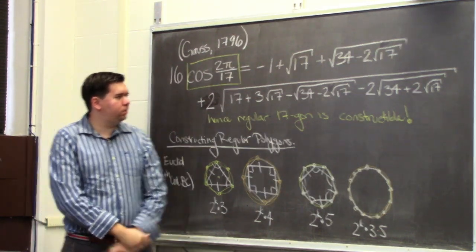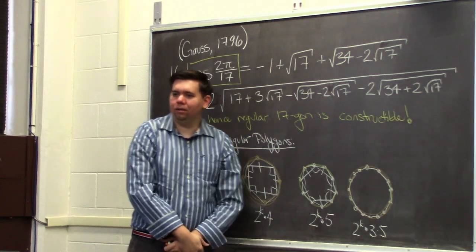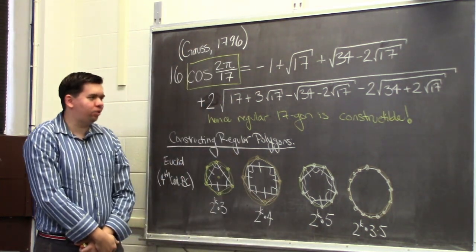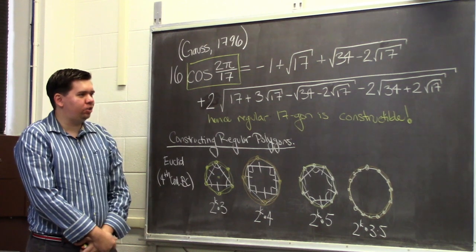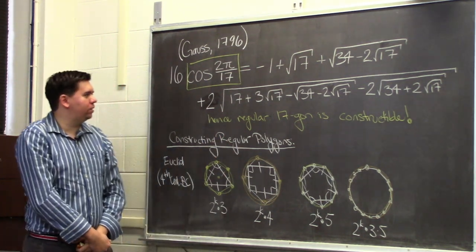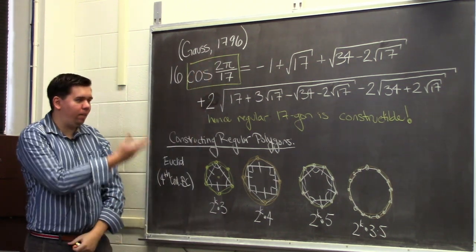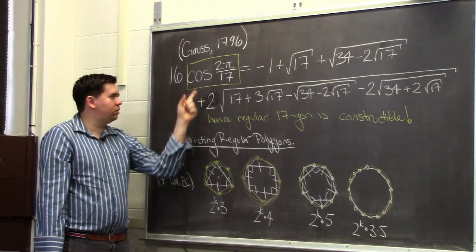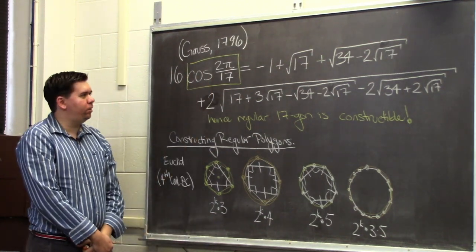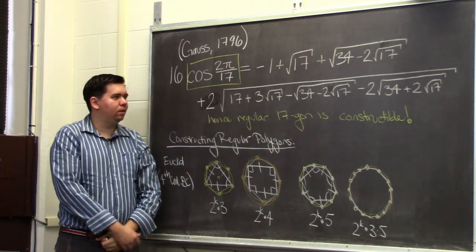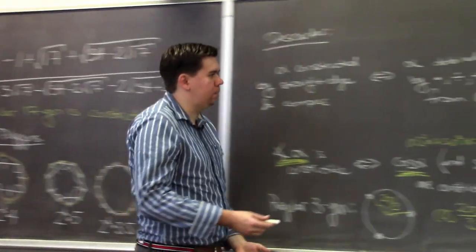Euclid could have figured this out without the algebraic description — he could have been clever with straightedge and compass and worked out the actual construction. But it's a bit tricky, as suggested by the messy algebra. What we want to do today is not just give you the construction, but explain how Gauss figured it out — because in 1796 he didn't have a computer algebra system. He had to do this by hand. To understand how he found that cosine of 2π/17 is constructible, we need to talk about something called roots of unity.